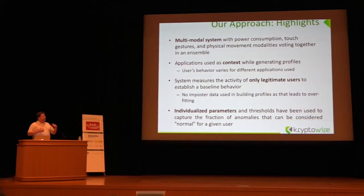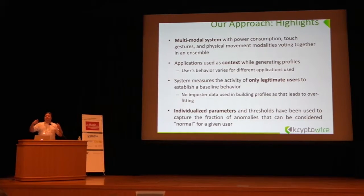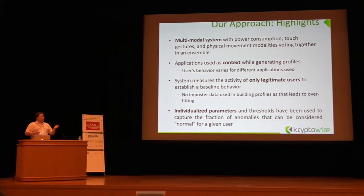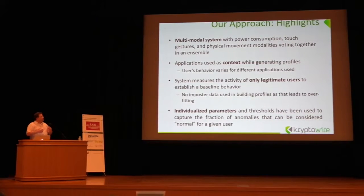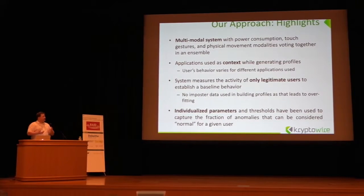We can do that because the system we have created is a multi-modal system. It takes input from long-term modalities like power consumption that require more time to develop but provide more robustness, and then gesture and physical movement modalities, which all vote together to create a score for you. We do this as a context while generating profiles. In Facebook, for example, you get a different context and a different authentication score than when you are in Google Chrome.